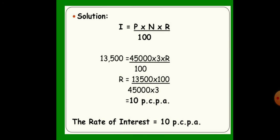Using the equation I = (P × N × R) / 100: I = Rs. 13,500, P = Rs. 45,000, N = 3 years. Applying all values: R = (13,500 × 100) / (45,000 × 3). Therefore, the rate of interest equals 10% per annum. Thank you for watching.